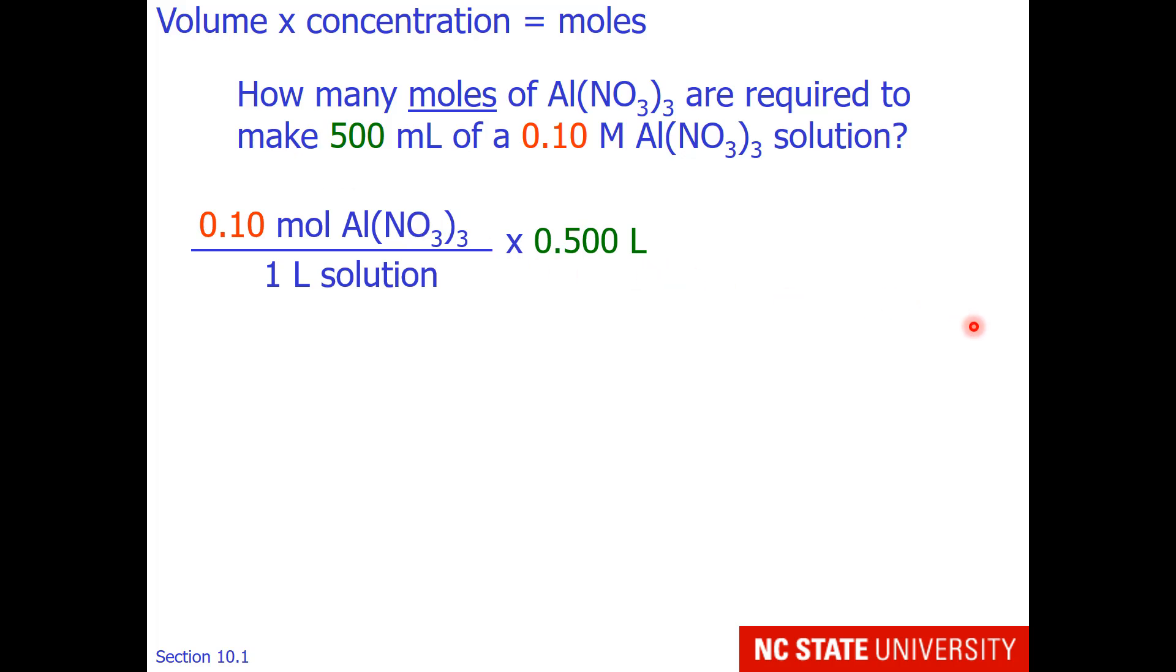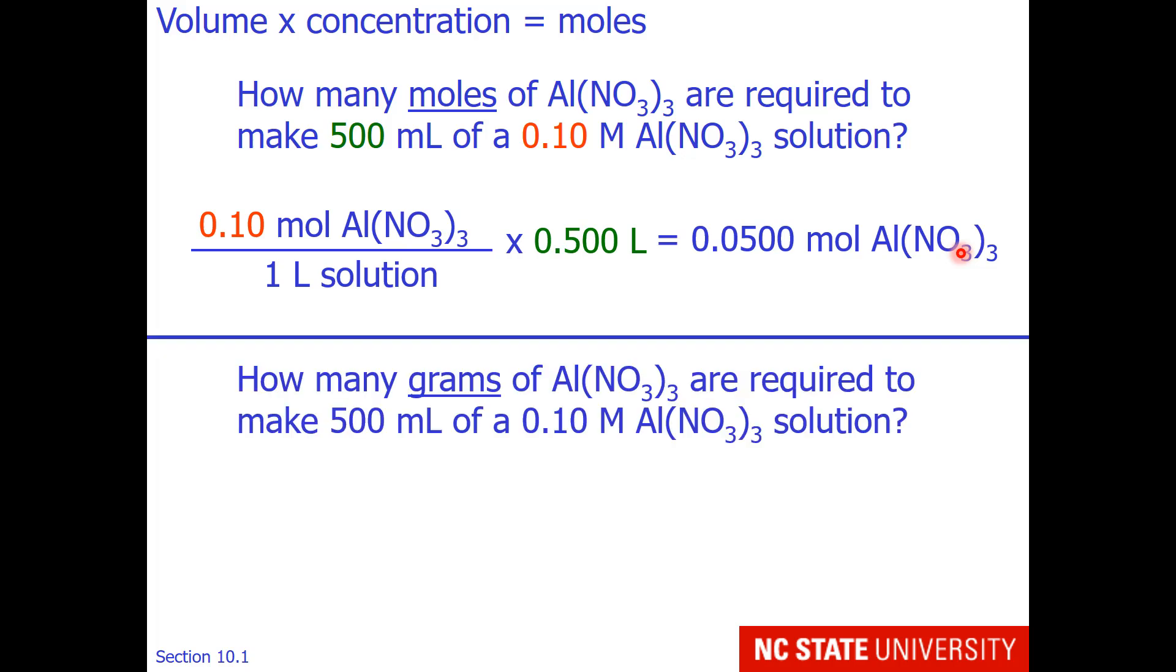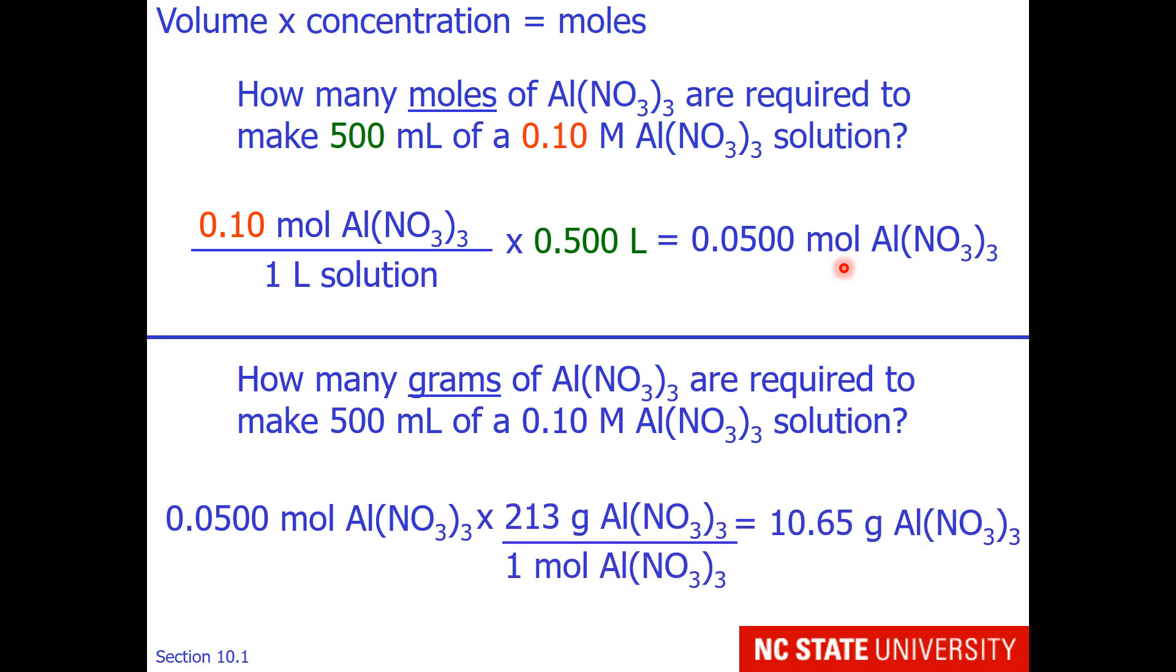Multiplying this out tells me that I need 0.05 moles of aluminum nitrate. If we change the question to ask how many grams are required, we already have the molar amount, so this is just a matter of multiplying by the molar mass.